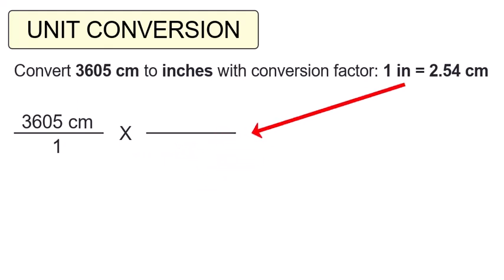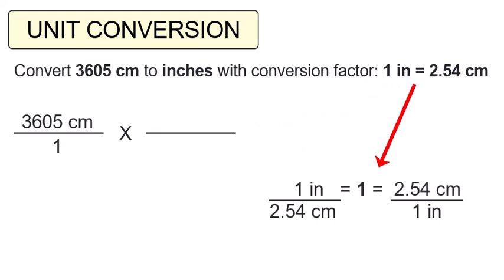Remember, one of the rules in math is that we can multiply any number by one without changing the value of that number. A conversion factor is just two equal numbers with different units that, when written as a fraction, are equal to one. For now, we'll just write in the multiplication operation and the fraction bar for the conversion factor, but leave the top and bottom of the fraction empty.